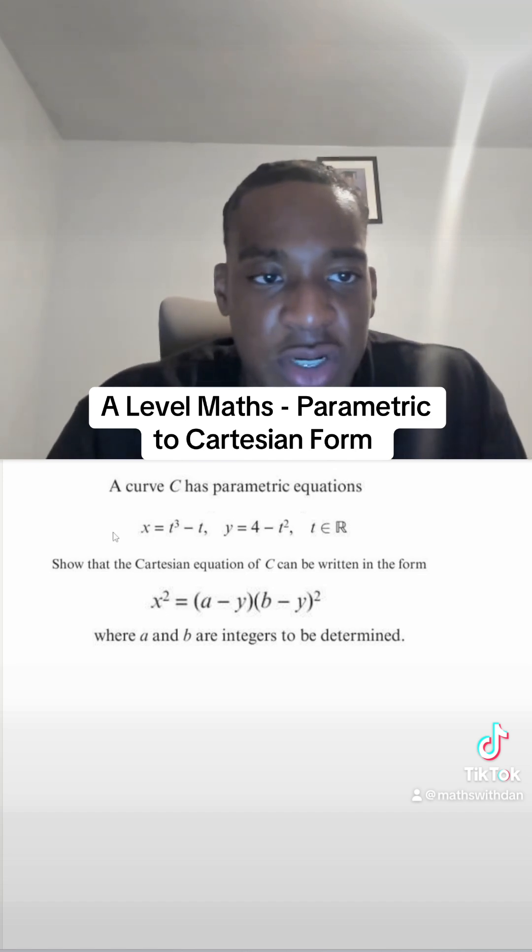I've got x squared here. Now, I'm just going to look at x. I can see that x, I can take out a t and it's going to be t times (t squared minus 1).